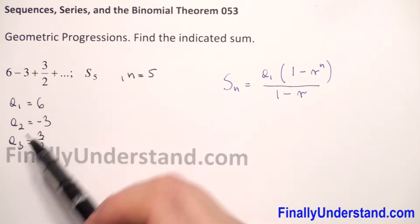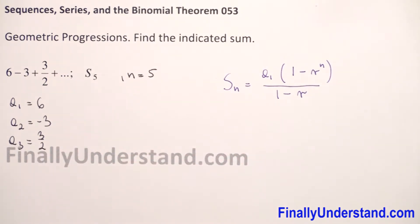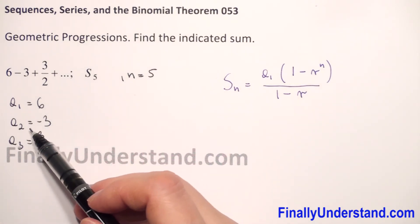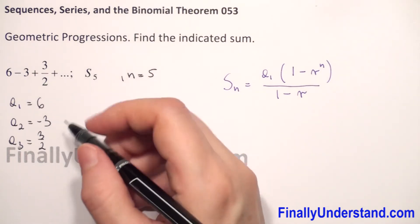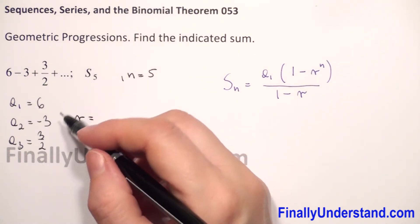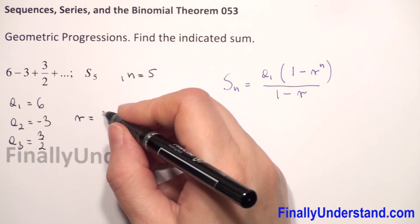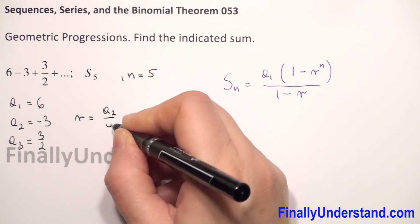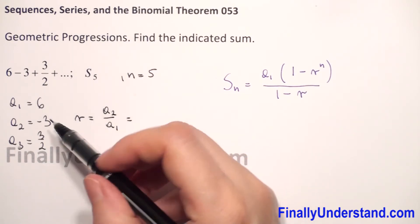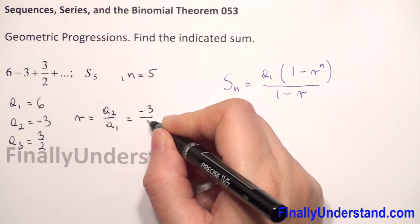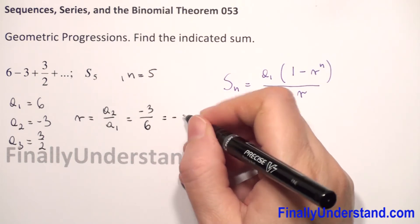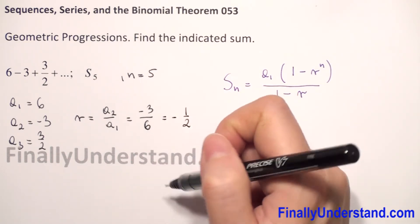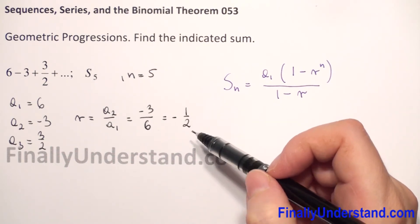We have a geometric progression, where every term after the first is obtained by multiplying the preceding term by the common ratio R. To find R, we take two consecutive terms and divide the second by the first. So A2 over A1 is negative 3 over 6, which equals negative 1 over 2. We can reduce 3 and 6, so R equals negative 1 over 2.